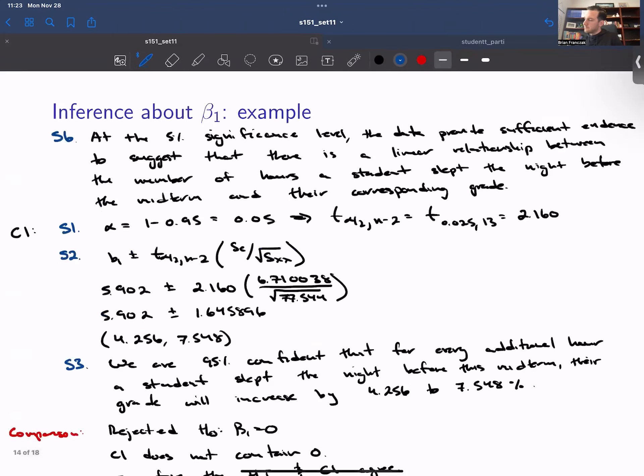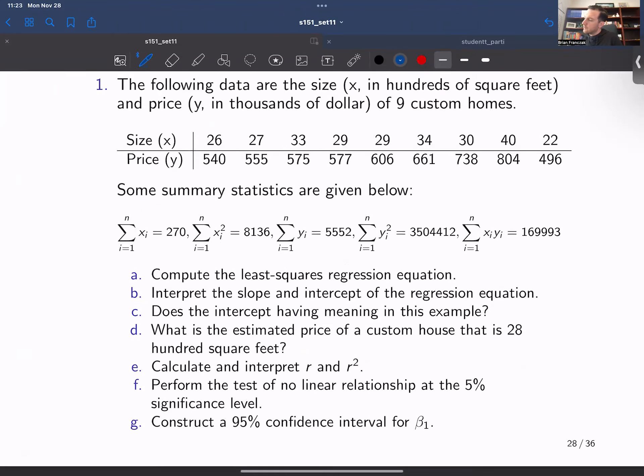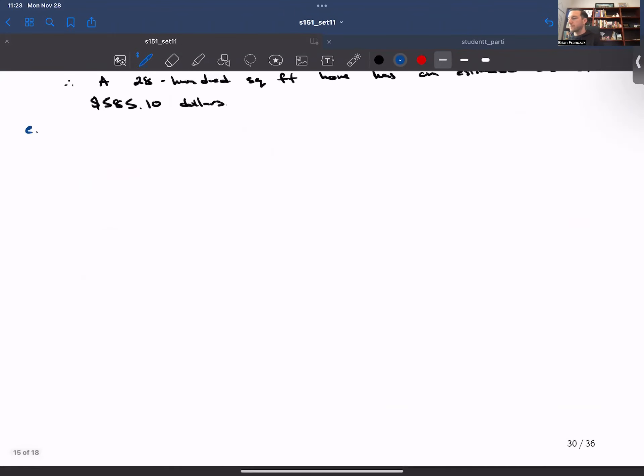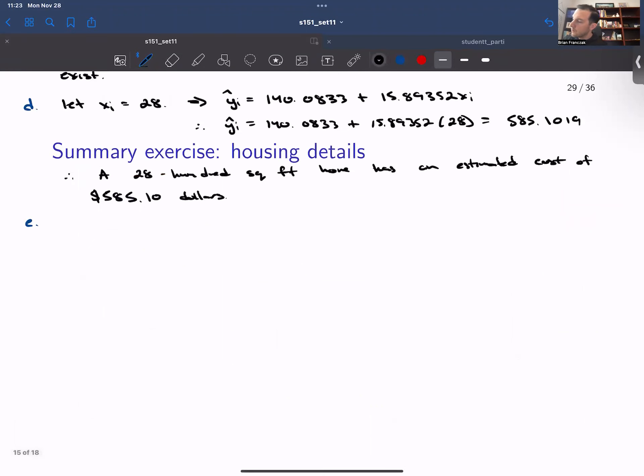Part E asks to calculate and interpret r and r squared. We can do this in a couple of ways. We'll do the full calculation. So r is equal to sxy over the square root of sxx syy. So we have sxy and we have sxx we did those in part a.